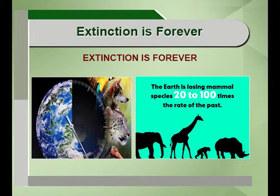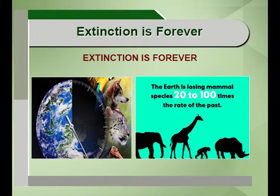The number of species and diversity has been increasing since the origin of life, but this increase is not steady. It is characterized sometimes with a very high rate of speciation and sometimes with minimal speciation. In the earth till now there have been five mass extinctions. The most massive occurred in the Permian period, 250 million years ago, with almost 76 percent of terrestrial populations and 96 percent of oceanic populations becoming extinct.